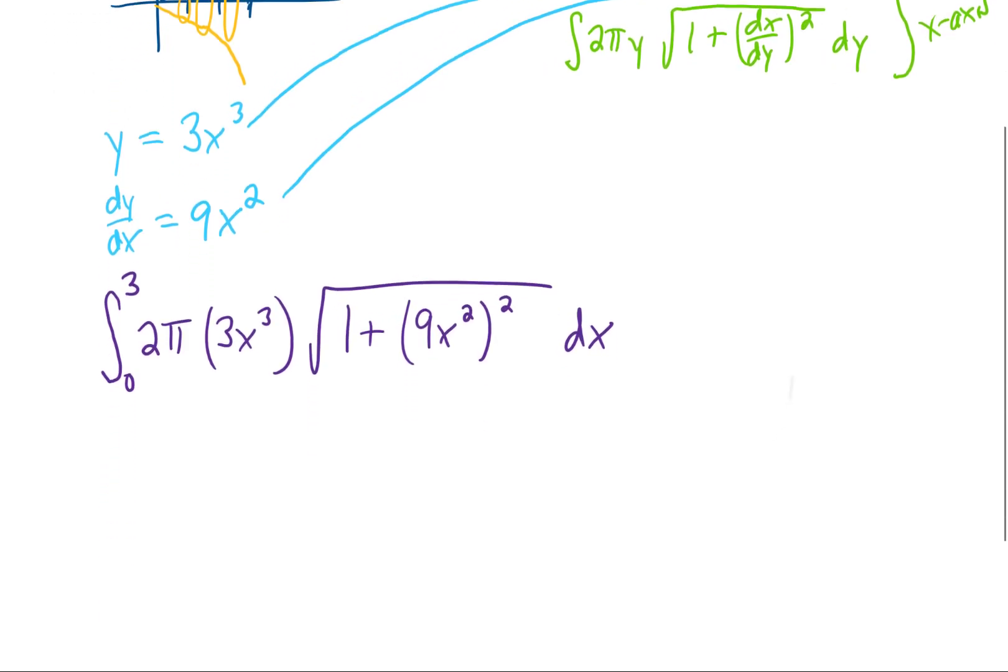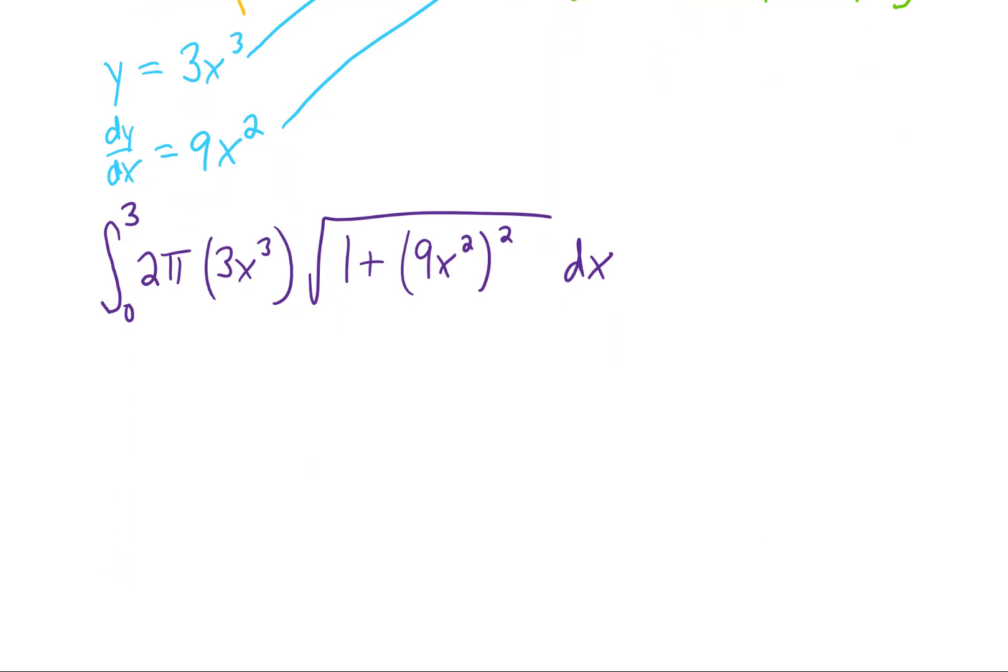This integral will not always be simple. I'm going to take 2π and the 3 out of the integral. We can also square 9x² to get 81x⁴.